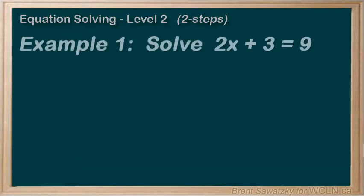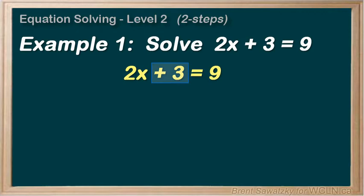Example 1. Solve 2x plus 3 equals 9. Again, the goal is to get the x by itself, isolated. The challenge we're facing here is that there are actually two things to clean up to get the x by itself. The plus 3, and the times 2.